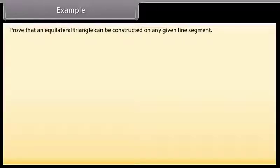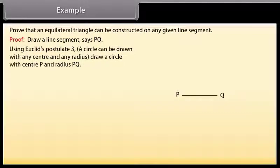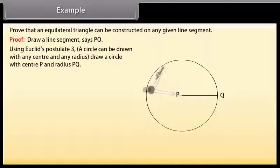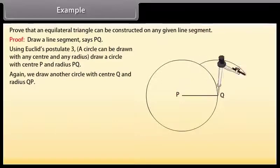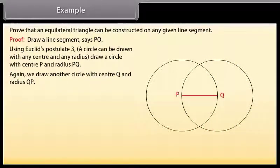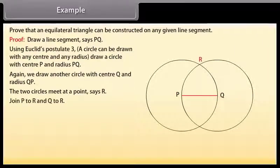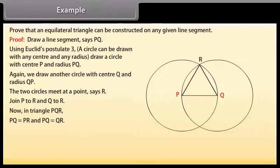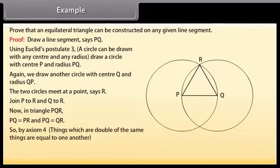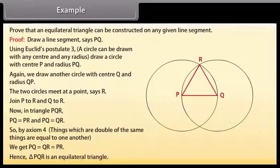Example. Let us solve an example now. Prove that an equilateral triangle can be constructed on any given line segment. Draw a line segment, say PQ. Using Euclid's postulate 3, which says that a circle can be drawn with any center and any radius, we will draw a circle with center P and radius PQ. Again, we draw another circle with center Q and radius QP. The two circles meet at a point, say R. Join P to R and Q to R. Now, in triangle PQR, PQ is equal to PR, and PQ is equal to QR. So, by axiom 4, things which are double of the same things are equal to one another, we get PQ equal to QR, which is equal to PR. Hence, triangle PQR is an equilateral triangle.